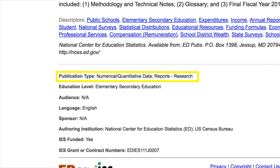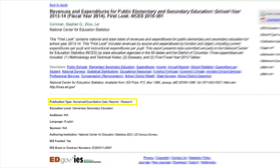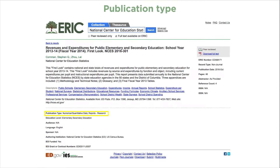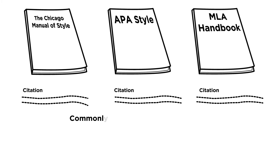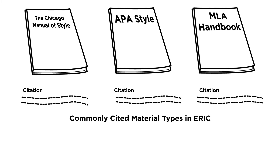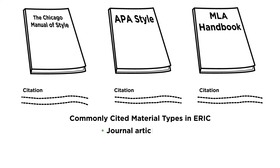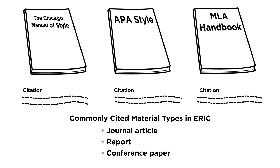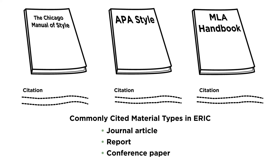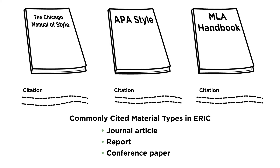In this example, you can see that this is a research report containing numerical or quantitative data from the National Center for Education Statistics. Now we'll look at sample citations for three commonly cited types of materials in ERIC: a journal article, report, and conference paper, and we'll show where to find the citation elements in the ERIC record.